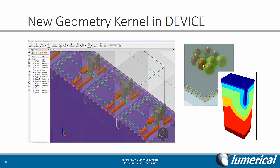On the right side of this slide, we have a solar cell design — it's very complex with multiple layers of spheres and cylinders. It would have been very challenging to create this kind of geometry with the old version of Device, but with the new geometry kernel, this is a very simple exercise. On the right here is the geometry being built — you can see all the layers.